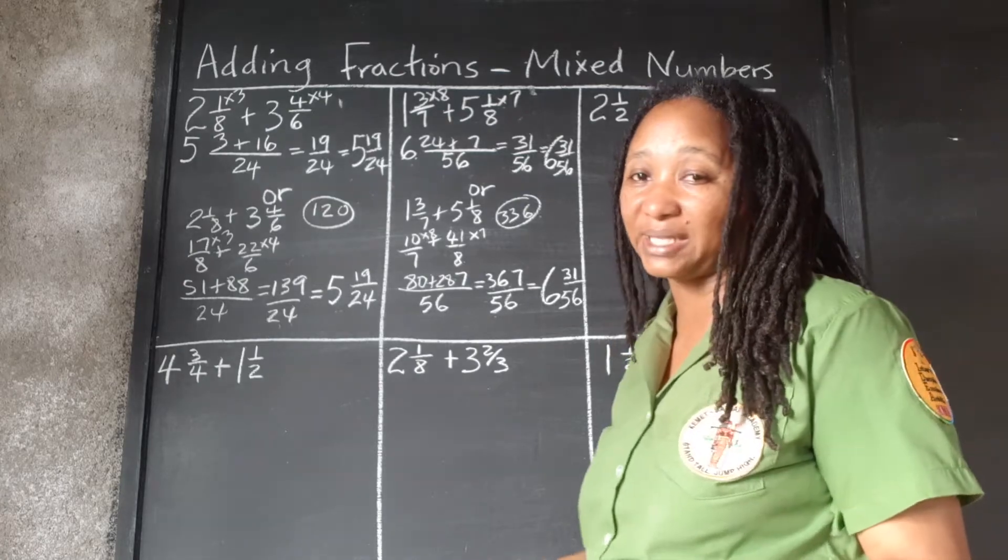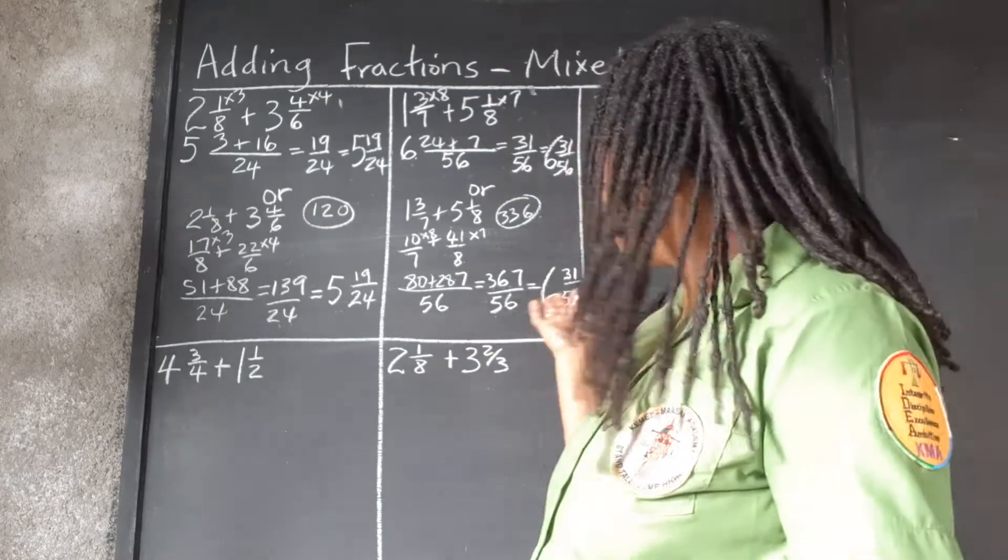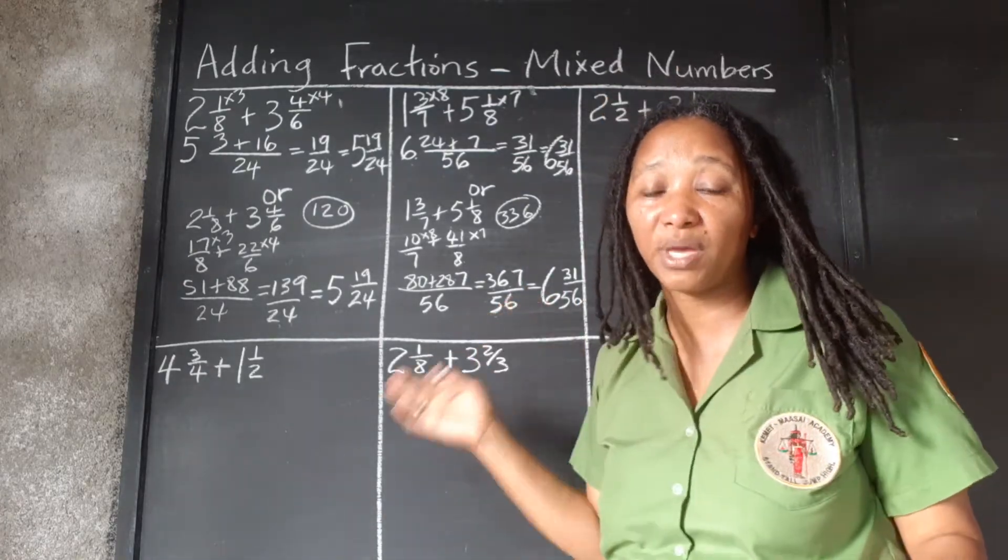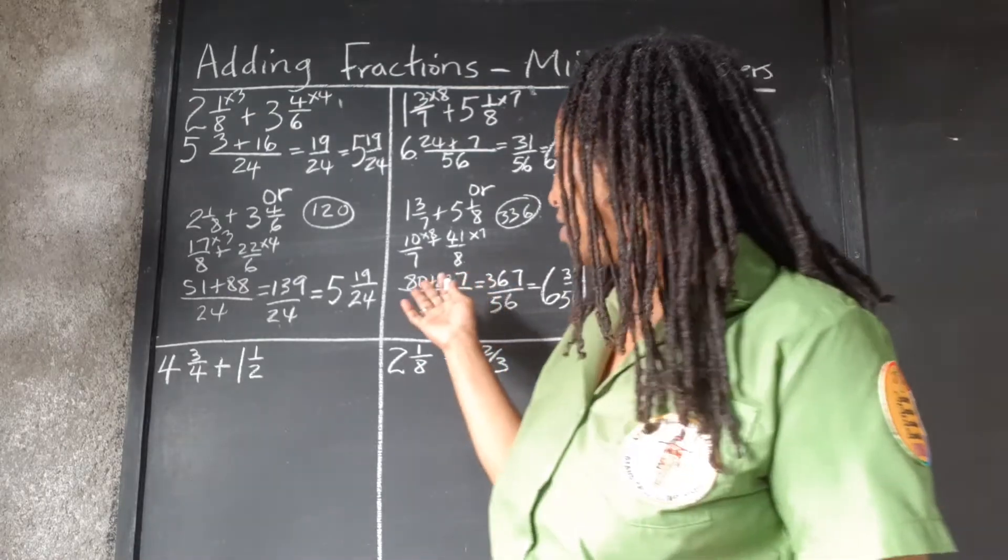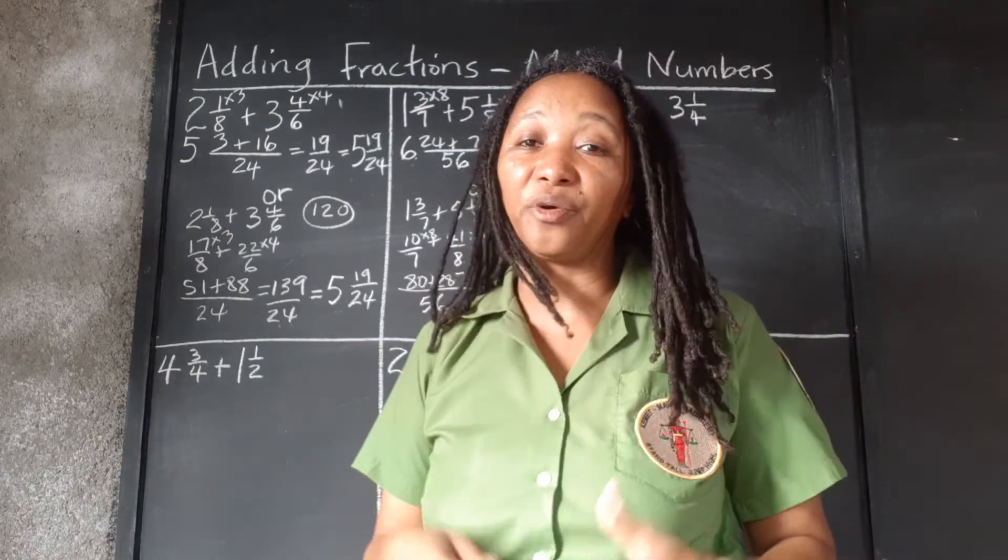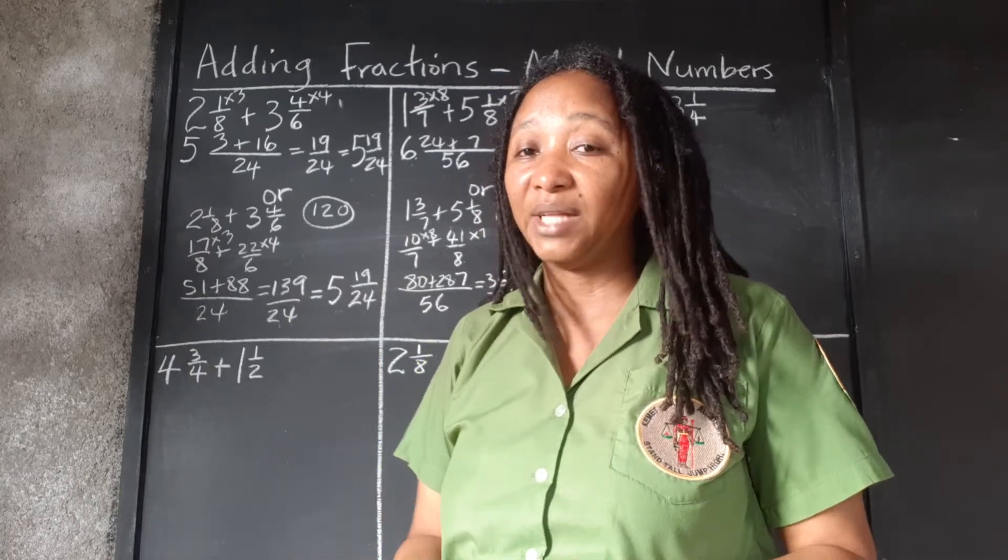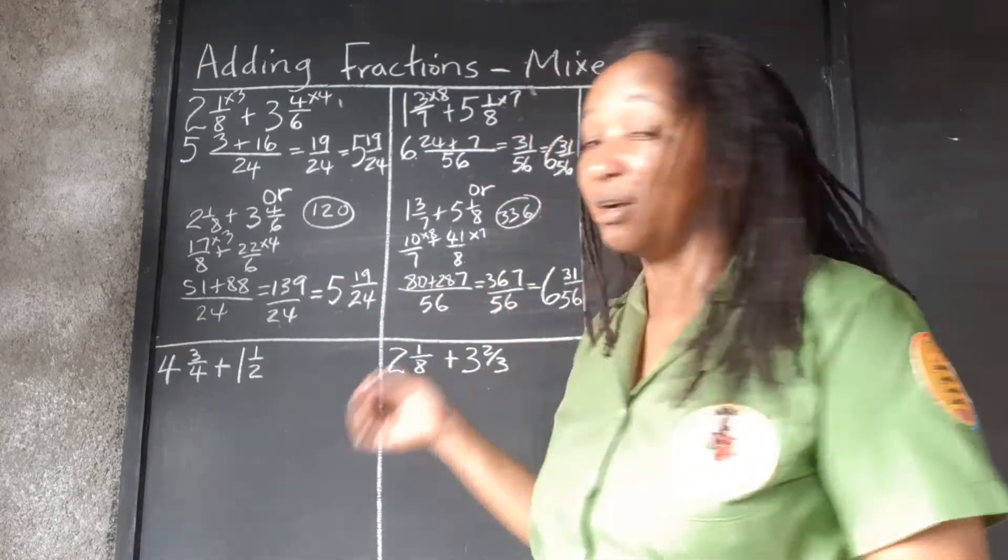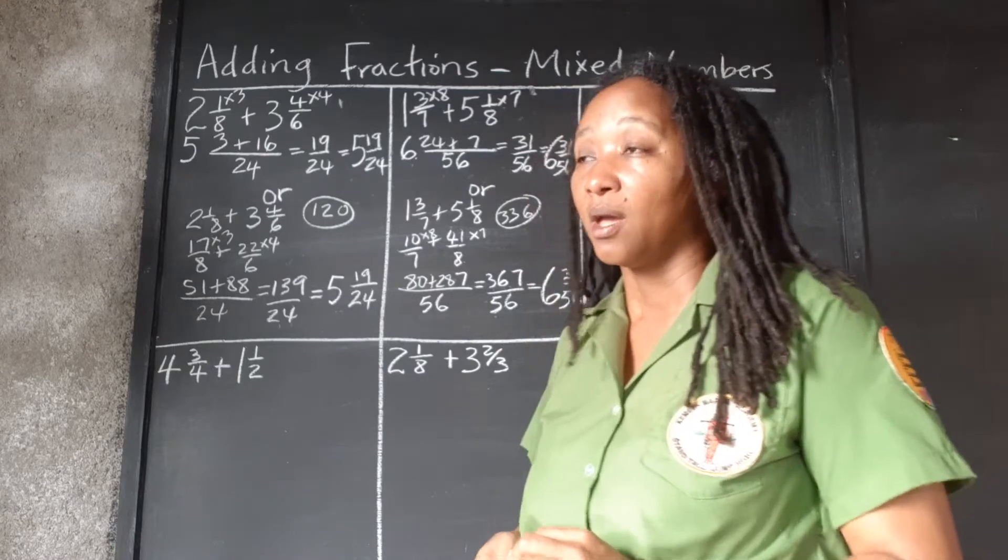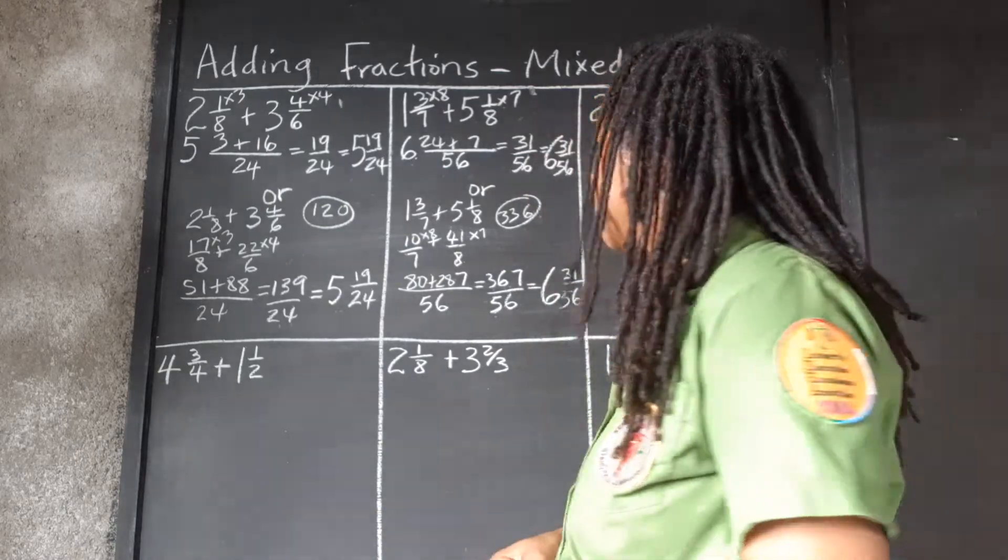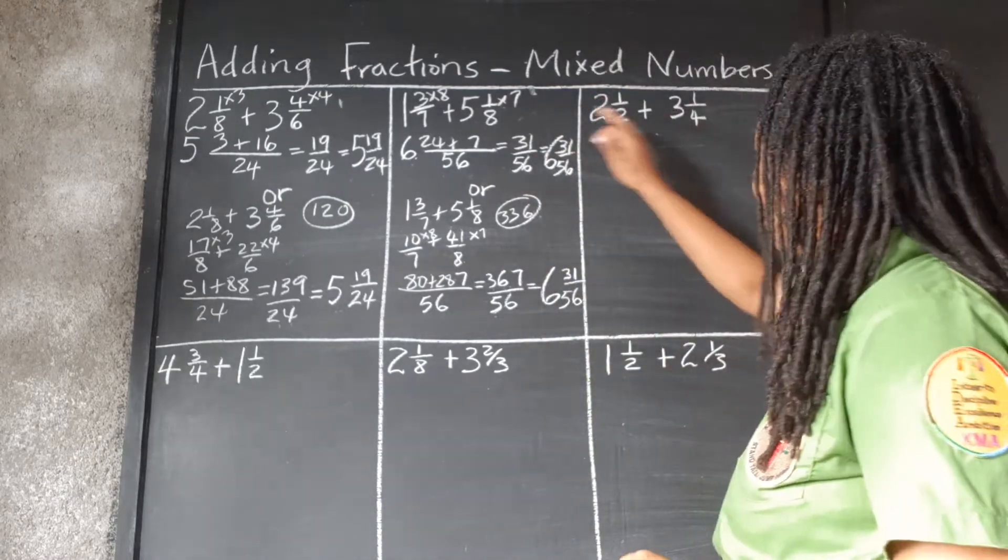So we get back our same answer. But you do admit that it is more difficult to work with the bigger numbers. Because when you change it to an improper fraction, you're going to end up with bigger numbers in the numerator. And so you're going to have bigger numbers to work with. But it can be done.